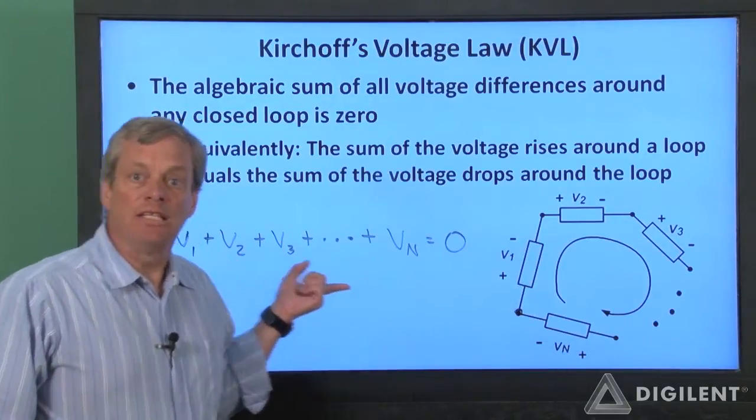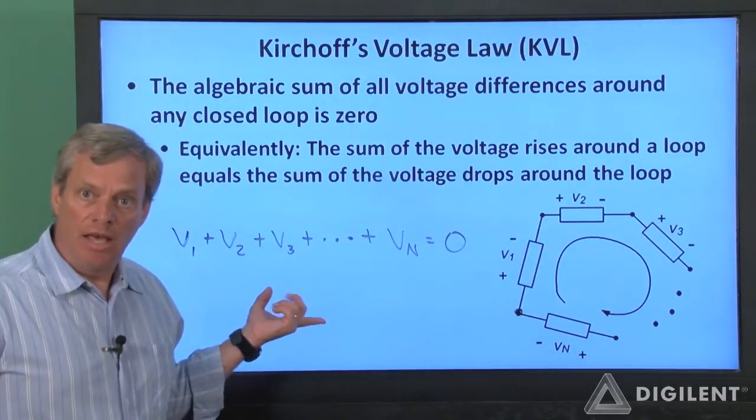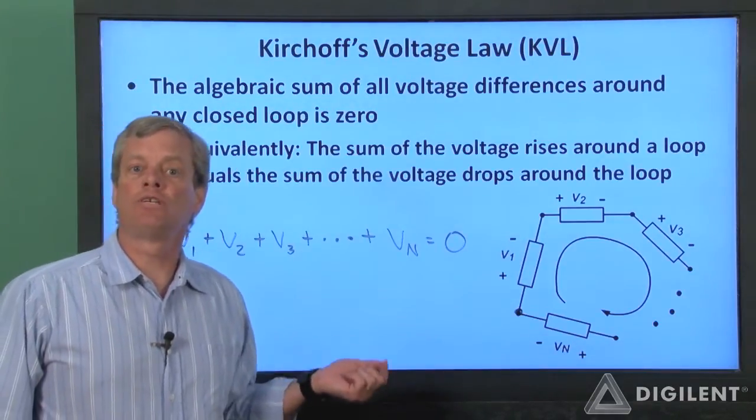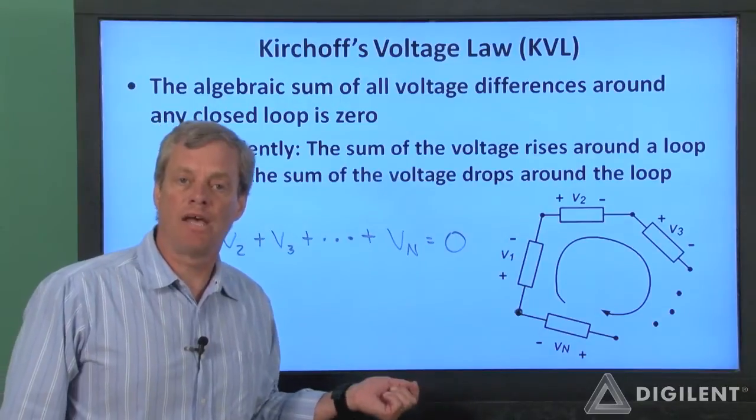Notice that from our equations at least one of the voltages here will need to be negative. KVL will keep track of the correct sign on the voltages as long as you're consistent about your assumed sign convention.